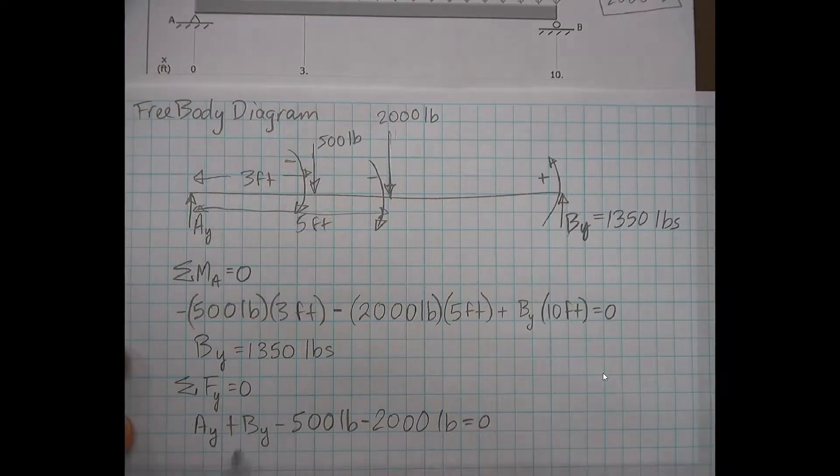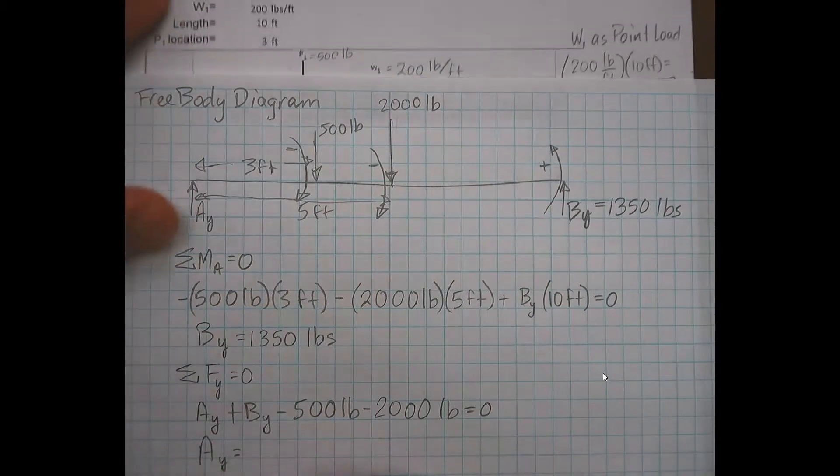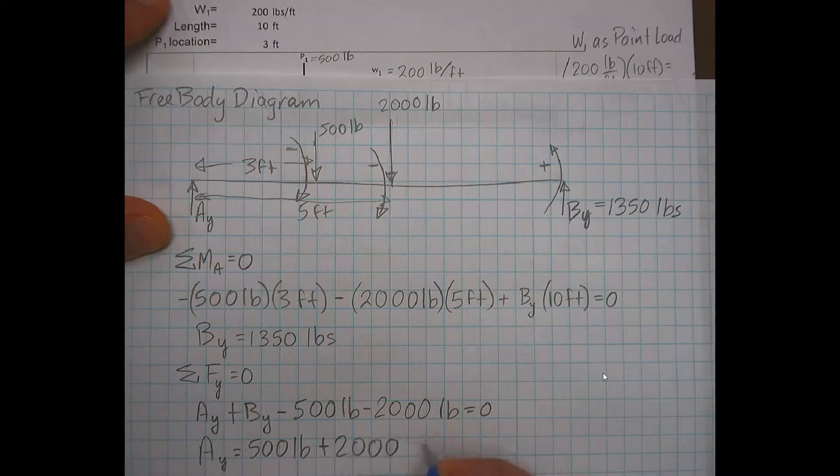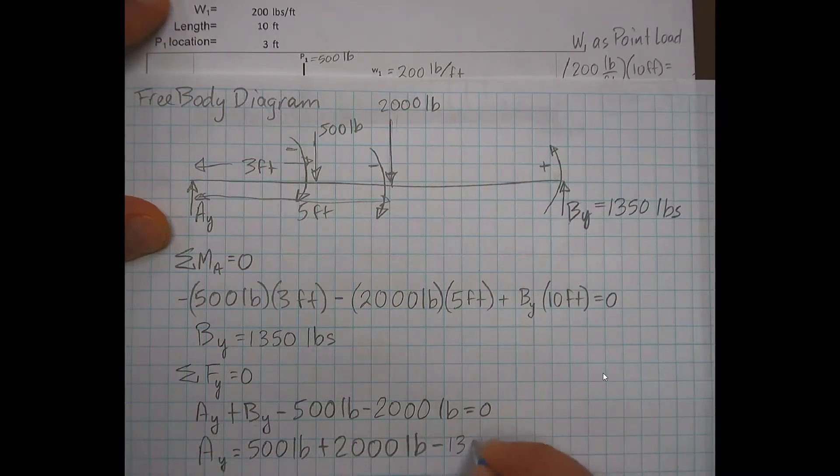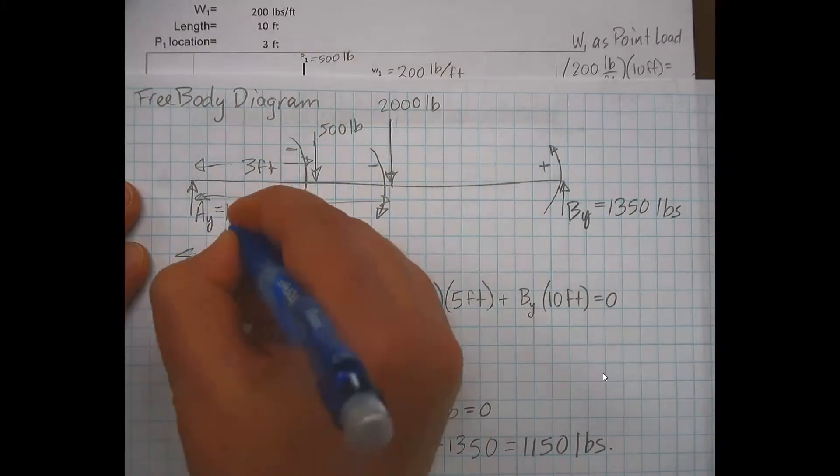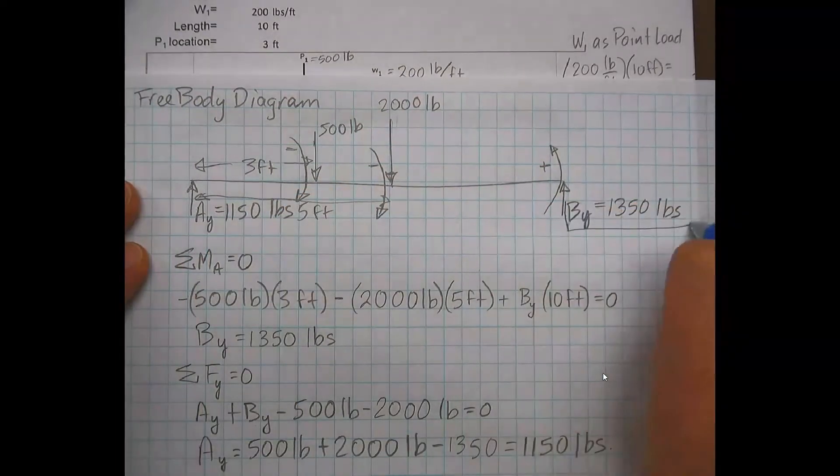We know BY is 1350, and so our only unknown here is AY. So AY is going to be the 500 pounds plus 2000 pounds minus 1350, which equals 1150 pounds. So we've solved for our AY and our BY. Our AY here equals 1150 pounds. And that is our free body diagram. So once we have that, we can use that in the next steps.